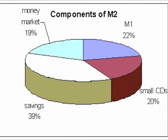M2 is a broader measure of money stock. In addition to the items included in M1, M2 includes the amount held in savings and small-time deposits, money market deposit accounts, and certain other short-term money market assets.